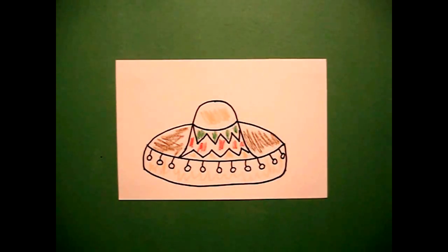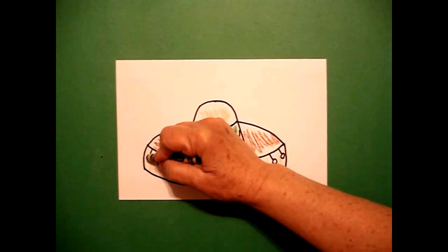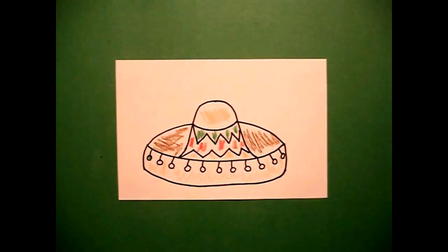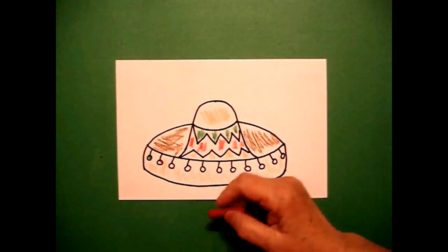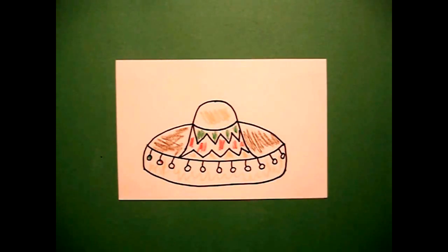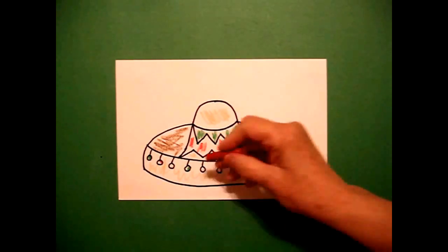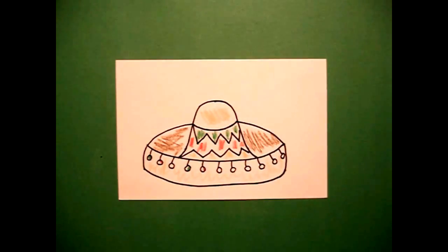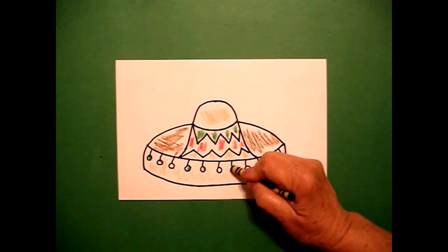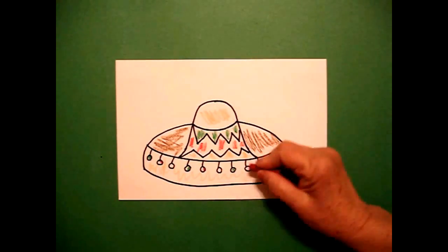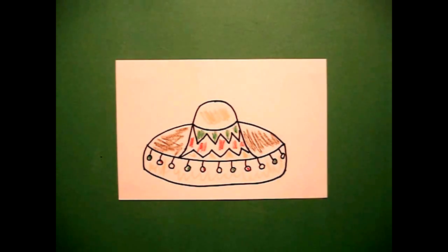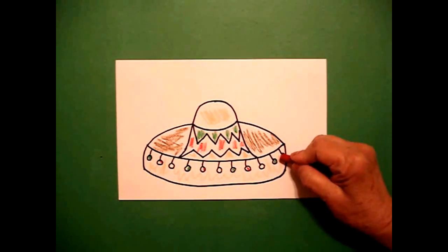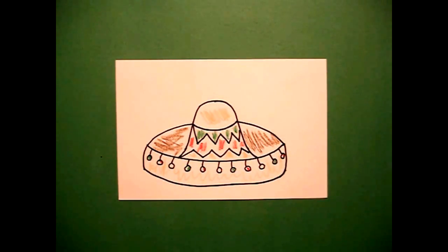And then my dingle balls, I'm going to color in a pattern. I'm going to go green, red, skip one white, then do it again. Green, red, skip one white. I'll repeat this pattern until you finish all the way around.